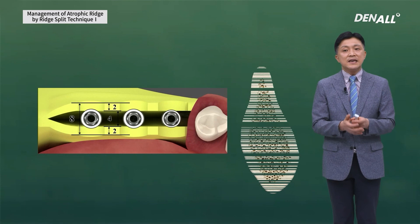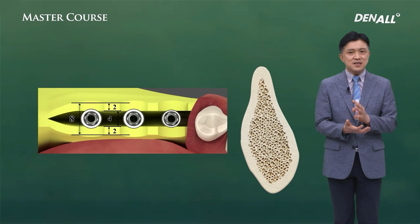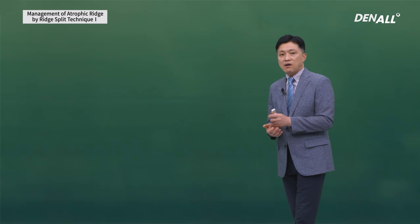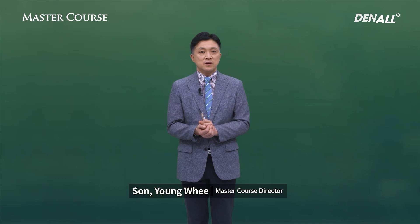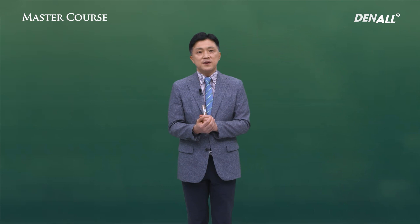For the success of the ridge split technique, the most important thing is to choose the right indication. If these procedures are performed on the wrong indication, it will lead to failure even for professionals. You need to choose the right patient and indication to achieve a good result. The asset kit can be used to safely perform ridge split when there is a lack of horizontal bone, allowing implants to be placed safely in narrow ridges. I hope you use this kit to improve your skills and expand your know-how.